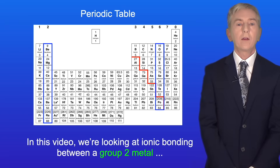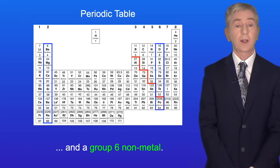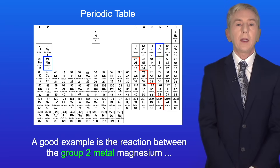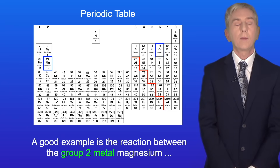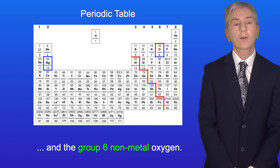So in this video we're looking at ionic bonding between a group 2 metal and a group 6 non-metal. A good example is the reaction between the group 2 metal magnesium and the group 6 non-metal oxygen.